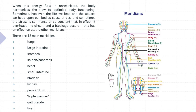There are 12 main meridians: the lungs, the large intestine, the stomach, the spleen and pancreas, the heart, the small intestine, the bladder, the kidney, the pericardium, triple warmer, the gallbladder, and the liver.